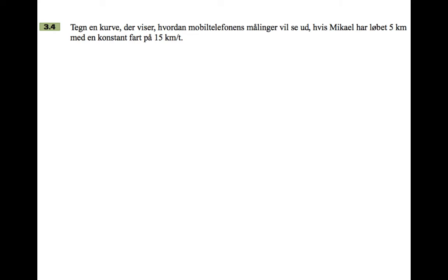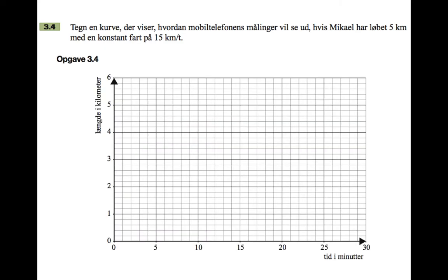Question 3.4: draw a curve that shows how the mobile telephone's measurements would see if Mikel had run five kilometers at a constant speed of 15 kilometers per hour. Okay, so I'm looking at my graph now and I'm going to my rough paper and I'm saying, okay...